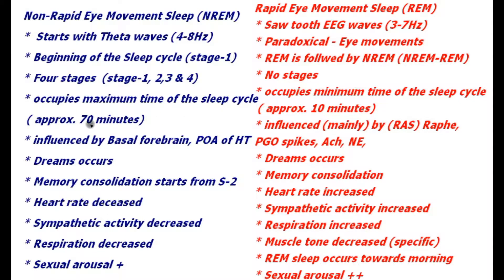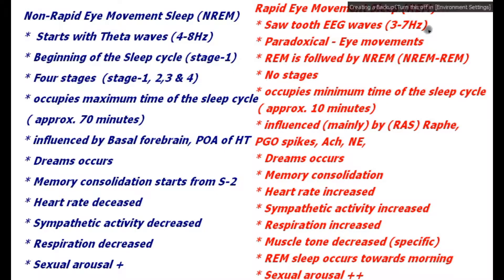Further stages of non-REM — stages 2, 3, and 4 — follow, and the maximum sleep cycle is occupied by non-REM, approximately 70 minutes. REM sleep starts with sawtooth EEG waves of 3 to 7 hertz and resembles more or less the awakened state.